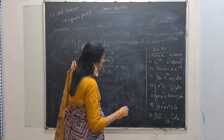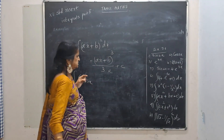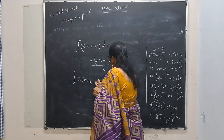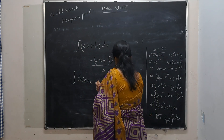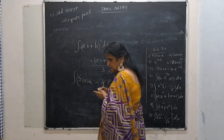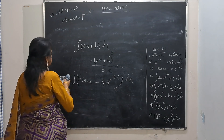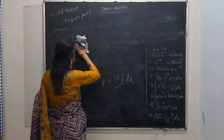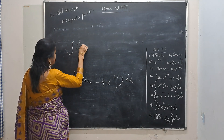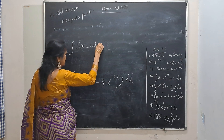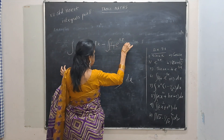Next: integral of sin 2x minus 4e to the power 3x dx. Split it: integral of sin 2x dx minus integral of 4e to the power 3x dx.